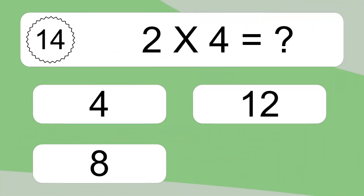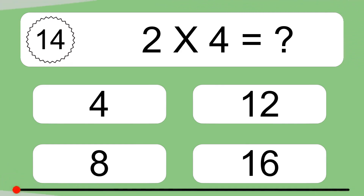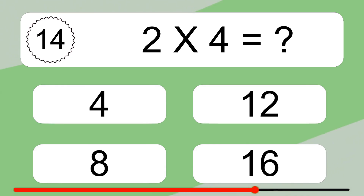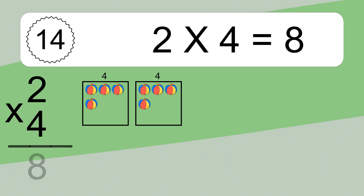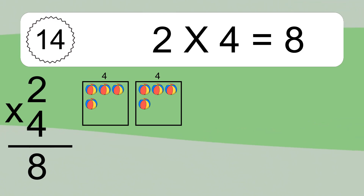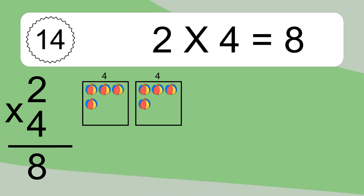Two times four equals what? Two times four equals eight. We have two boxes and each box has four colorful balls inside. If you count all the balls in all the boxes together, you will have two times four balls. This equals eight balls.